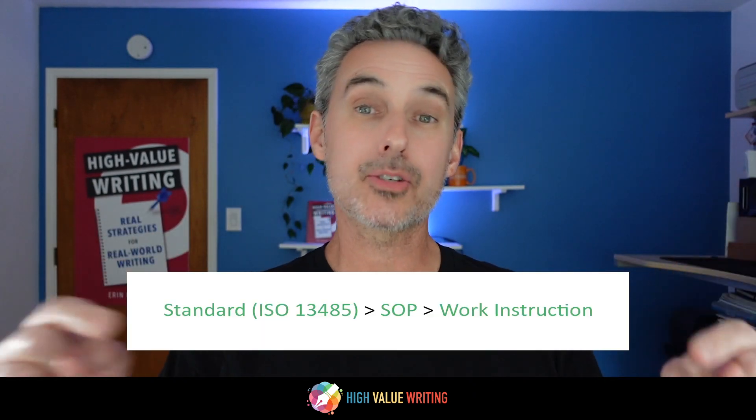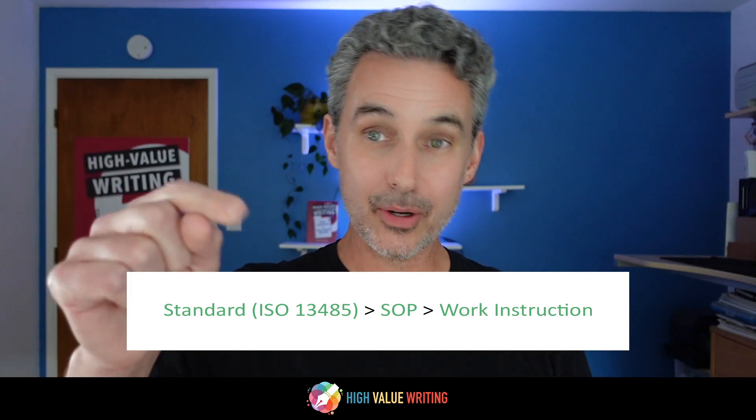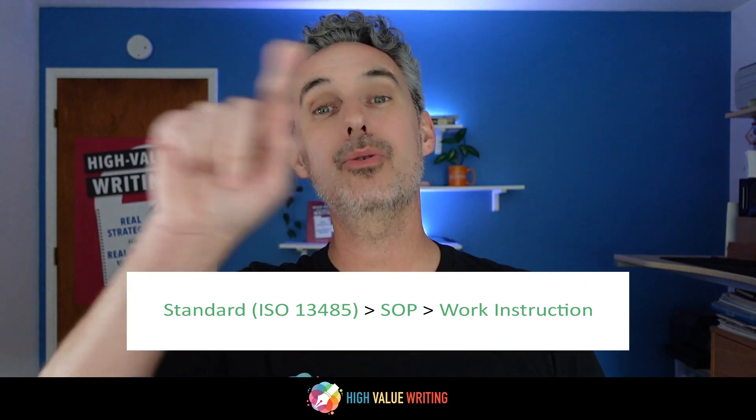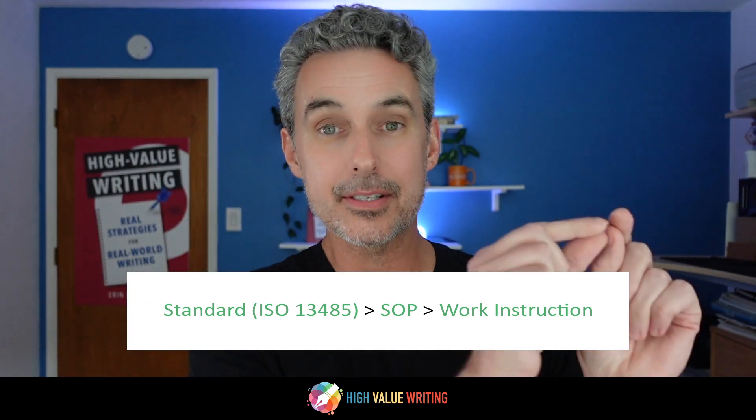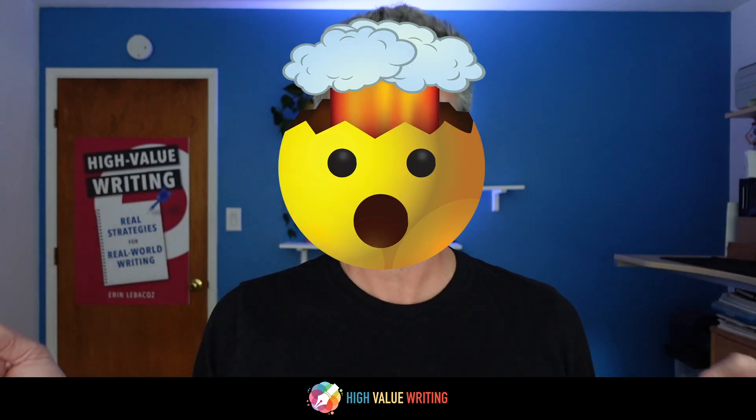So you see how the breadcrumbs work. In this graphic, you can see the standard goes to the SOP, which then goes to the work instruction — a series of breadcrumbs that goes from standard to SOP to work instruction. QMS documentation written with purpose statements including these breadcrumbs allows for and creates a sense of flow through your QMS documentation.